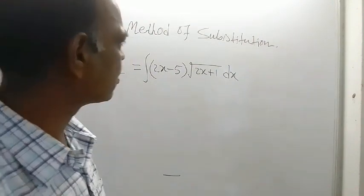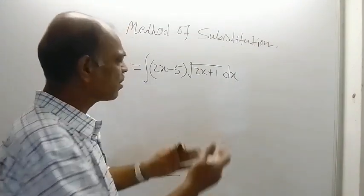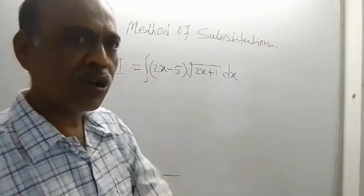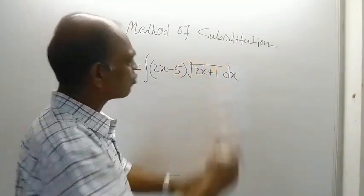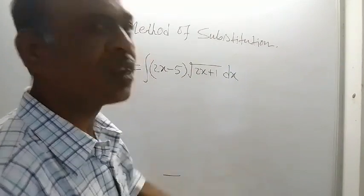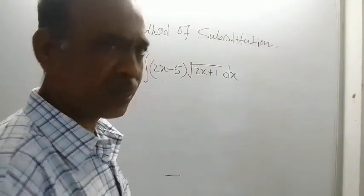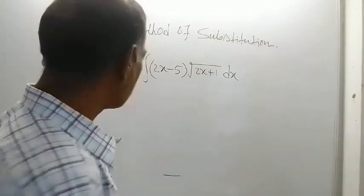Since the format is standard, substitution is also very easy. Here you can see root of (2x+1) is there. Simply put 2x+1 equal to a new value, say it is z squared.